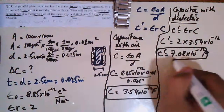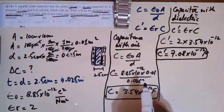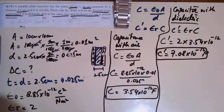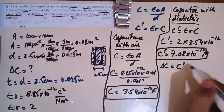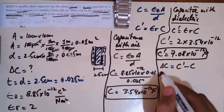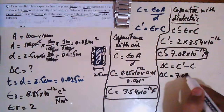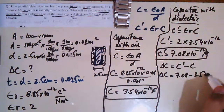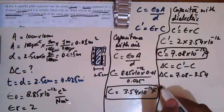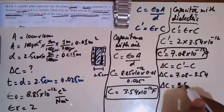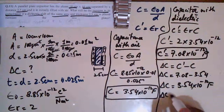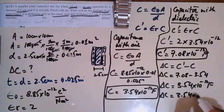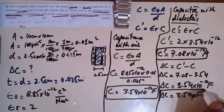This is the capacitance with a dielectric of constant 2, completely filling the plates. Now for the change in capacitance: ΔC = C' − C = 7.08 − 3.54 = 3.54 × 10⁻¹² farad, or 3.54 picofarad. Here pico (small p) is equivalent to 10⁻¹².